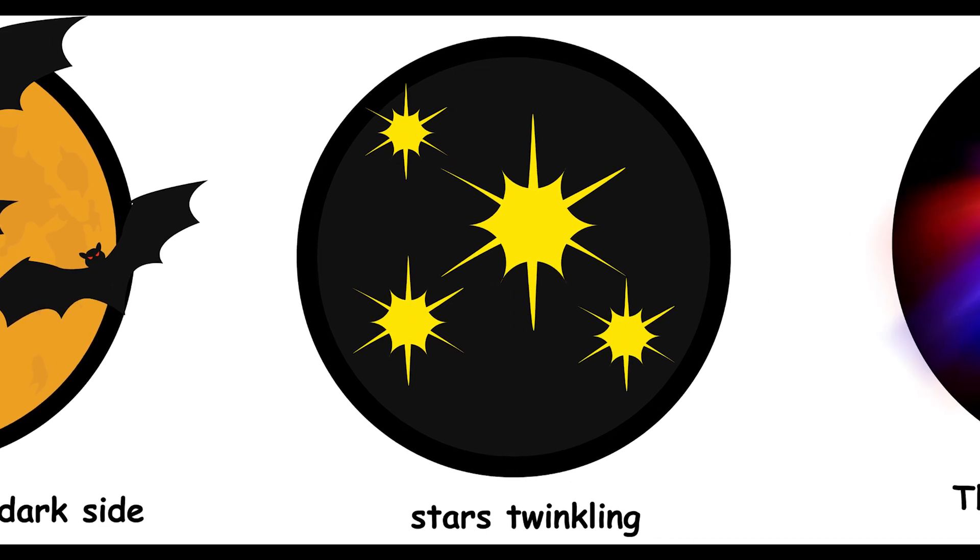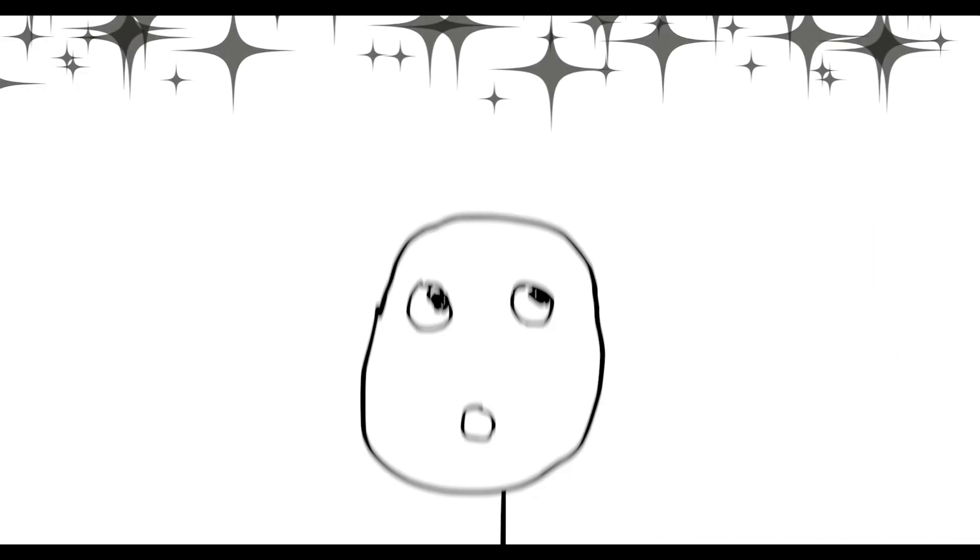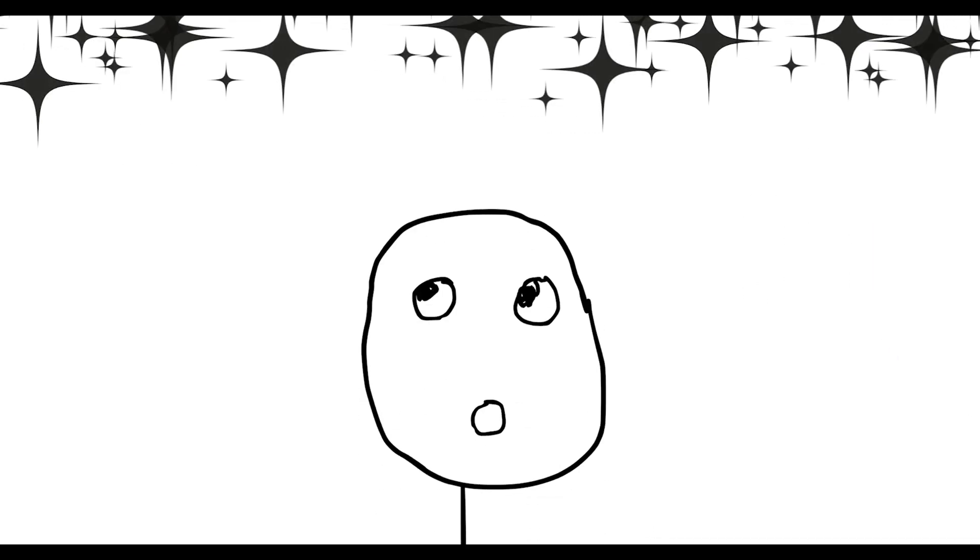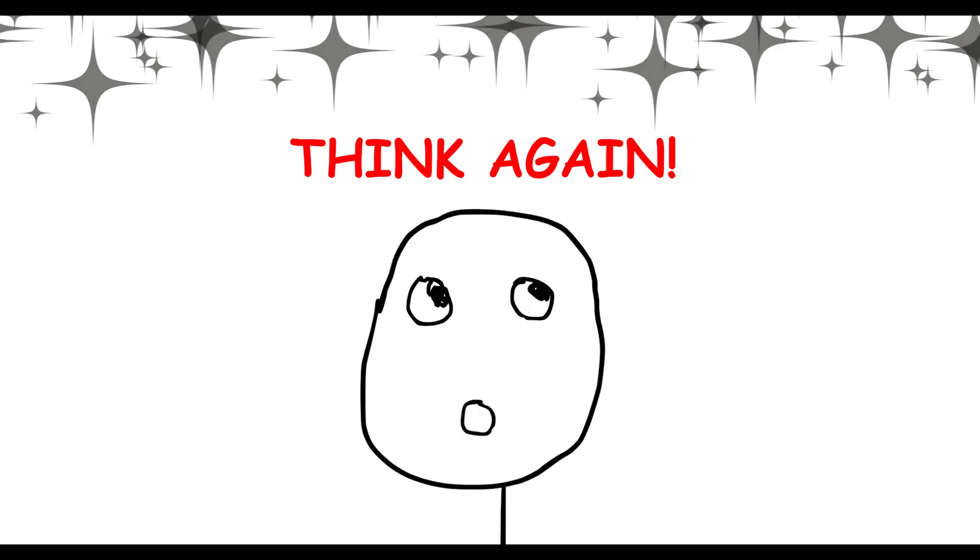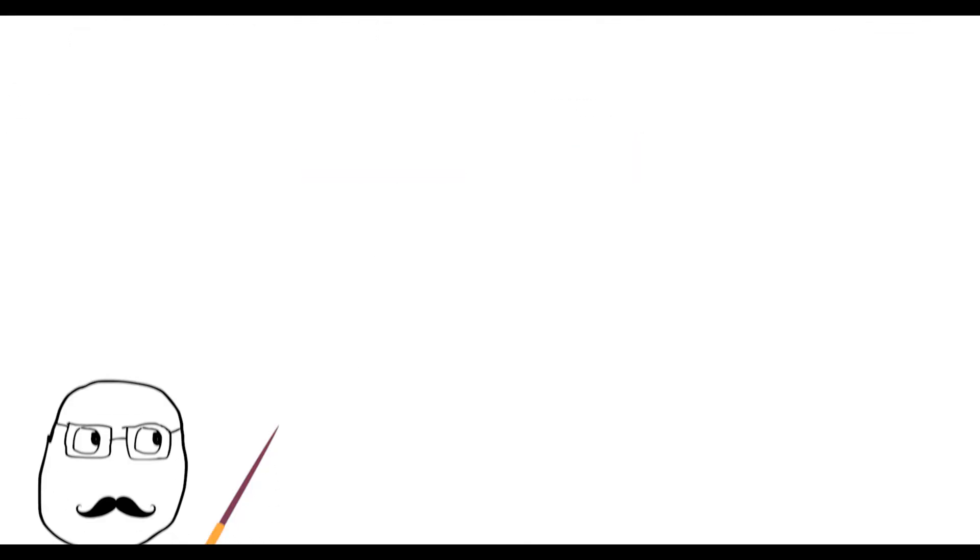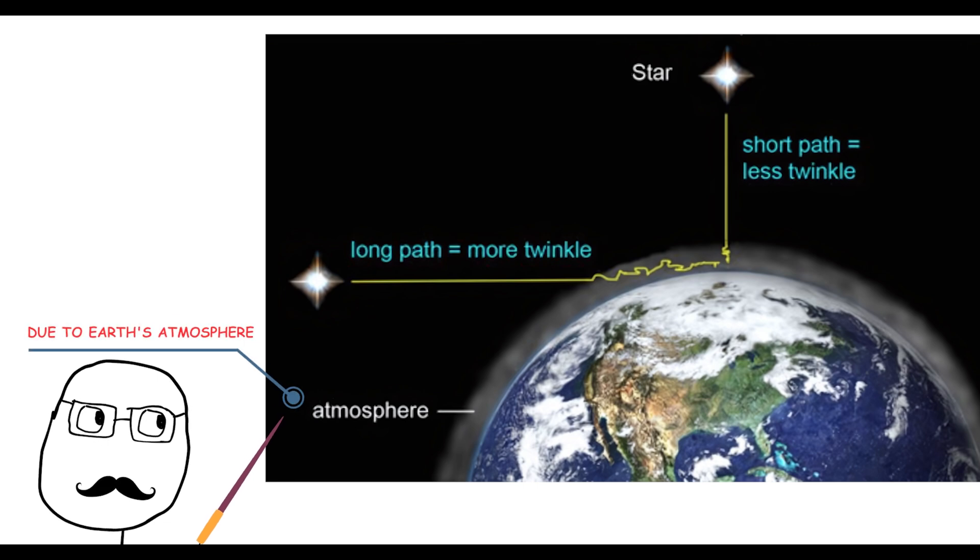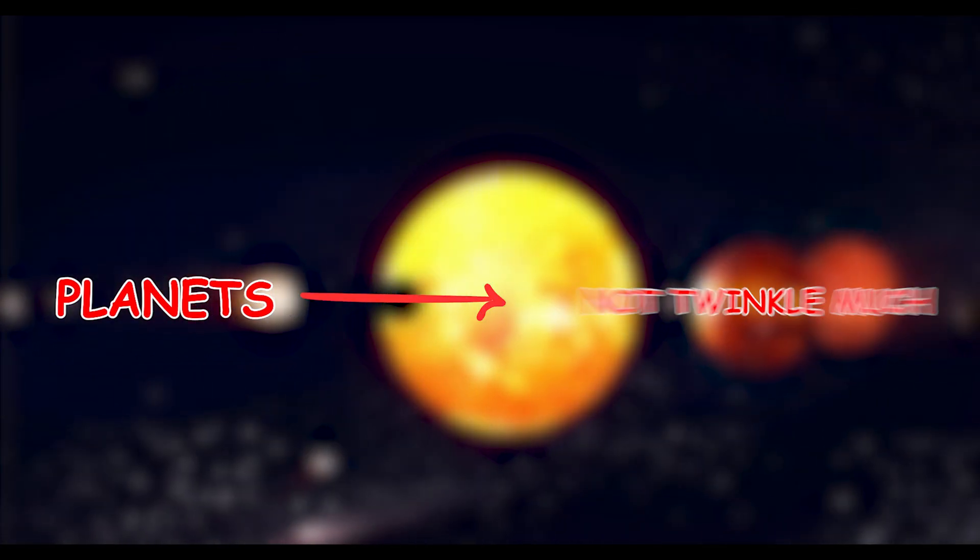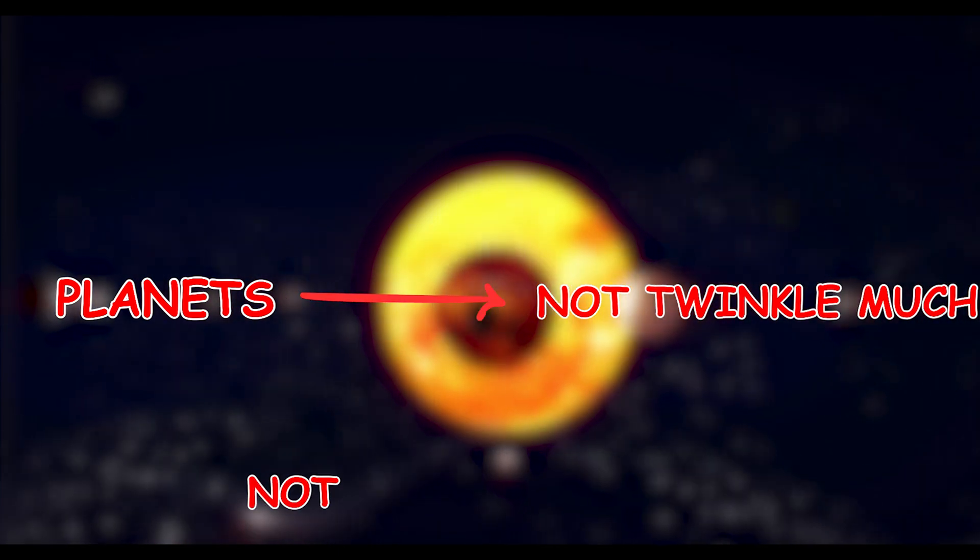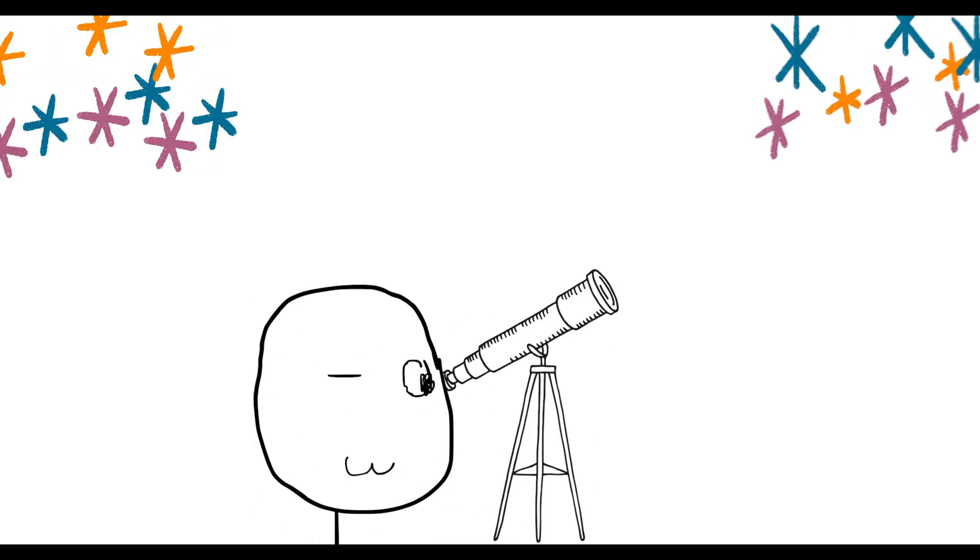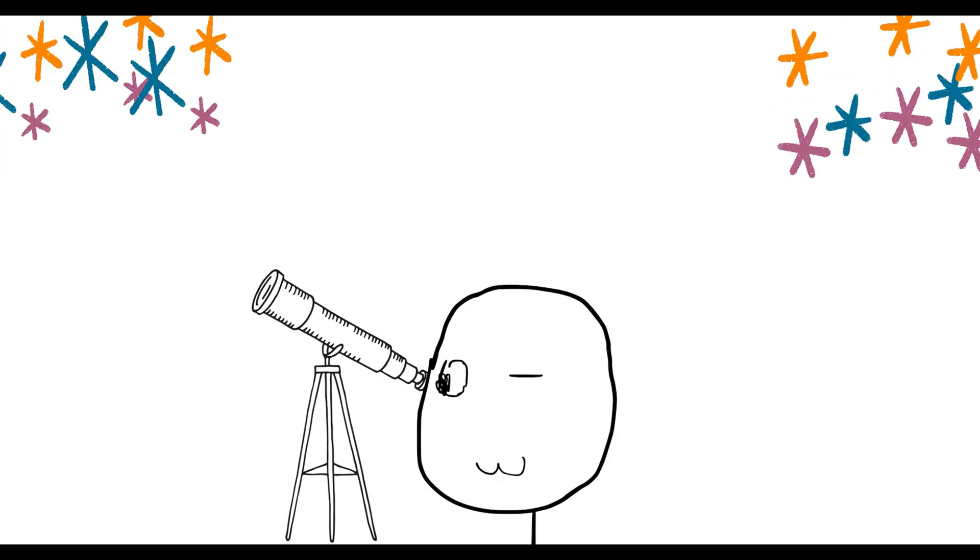You can see stars twinkling because they are far away. Why do stars twinkle? If you think it's because they're far away, think again. Stars twinkle due to Earth's atmosphere, which distorts the starlight as it passes through. Planets don't twinkle as much because they appear as disks, not points of light. So the next time you stargaze, thank our atmosphere for the twinkling show.